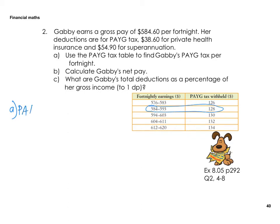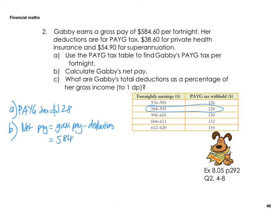Part B: we want net pay. Net pay equals gross pay minus deductions. The gross is $584.60, take away $128 for the tax, take away $38.60 for health insurance, and another $54.90 for superannuation.